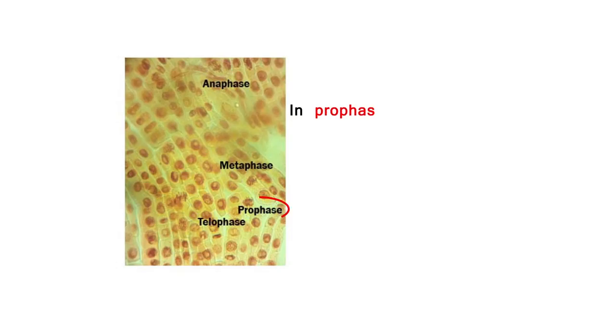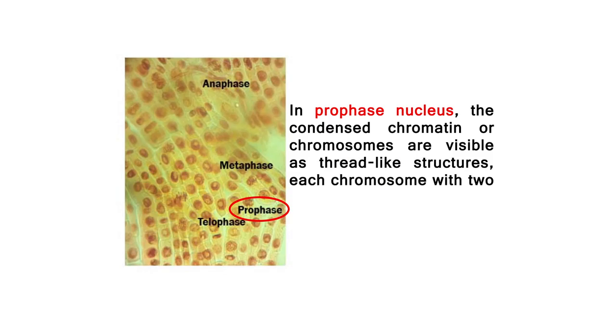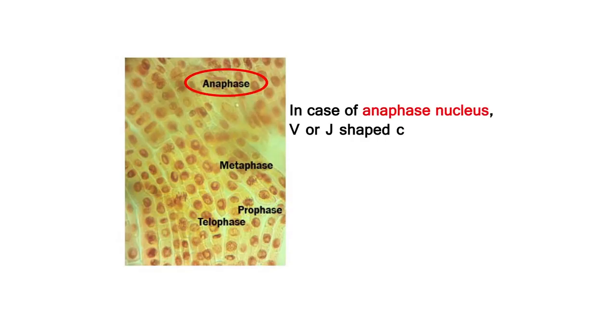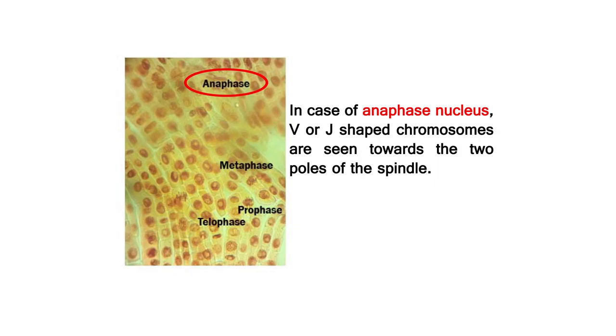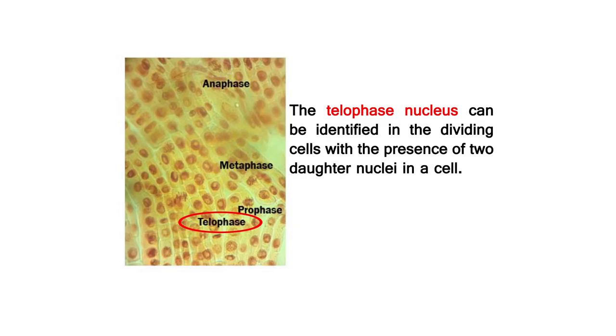Let us now see the results. Large and distinct nuclei with distinct nuclear membrane and nucleolus of the dividing onion root tip cells are visible. In the interphase nuclei, the chromatin networks are not distinguishable into chromosomes. In prophase nuclei, the condensed chromatin or chromosomes are visible as thread-like structures, each chromosome with two sister chromatids. In metaphase nuclei, the chromosomes are seen to lie in a line on the equator of the spindle. In anaphase nuclei, V- or J-shaped chromosomes are seen towards the two poles of the spindle. The telophase nucleus can be identified in the dividing cells with the presence of two daughter nuclei in a cell.